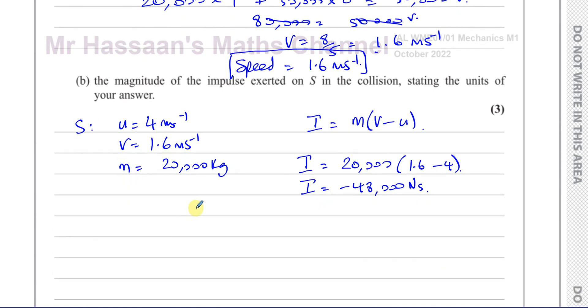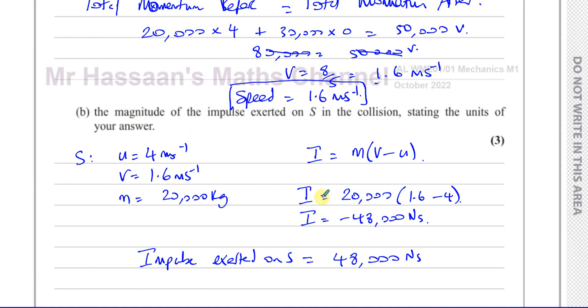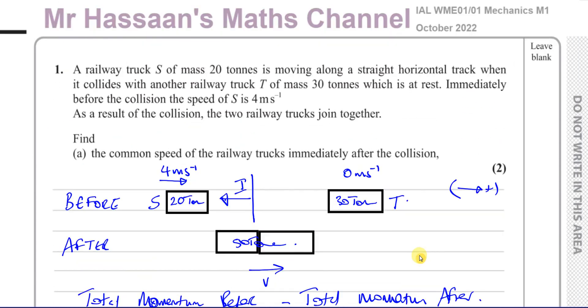Now, we want the magnitude of the impulse. So we just say that the impulse exerted on S, its magnitude is 48,000 newton seconds. We know that it's in this direction. The impulse is in the opposite direction to its moving because that's what caused it to slow down. But they don't care about the direction here. They just care about the magnitude. And we need to state the units of our answer. So that's fine for the answer here. And that completes question number one.